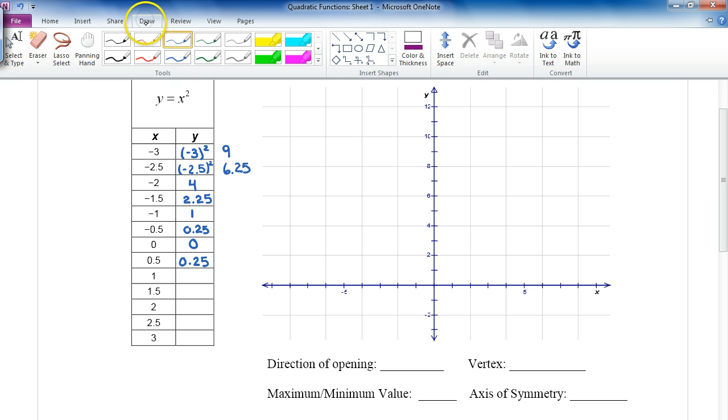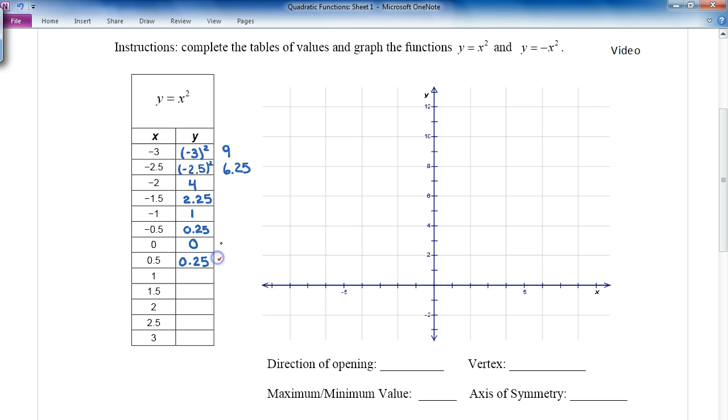You might notice an interesting thing here. Look at this: 0.5 squared is the same as negative 0.5 squared. And if I continue, I see that there's a sense of symmetry here on either side of 0. The values here are the same as the values up here. So look at that interesting set of symmetry.